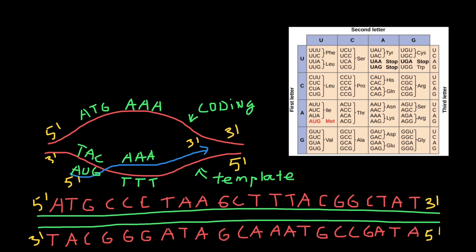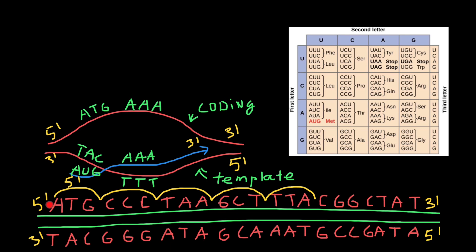We read messenger RNA from 5' to 3'. Messenger RNA not only has the same sequence as the coding strand of the DNA, but it is also made from 5' to 3', just the same as the coding strand of the DNA. In order to find a codon in DNA, we just start reading DNA in trinucleotide sequences, which we call codons. As you see, the first codon reads as A, T, G, which corresponds with AUG in messenger RNA — so this can be a start codon.